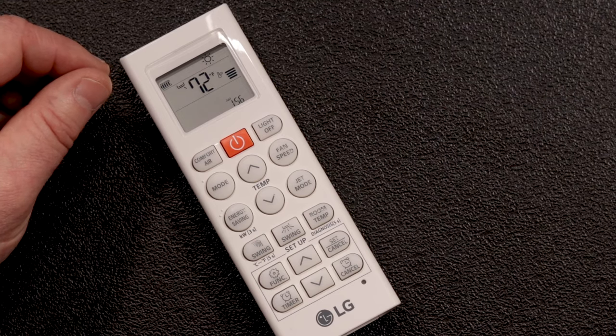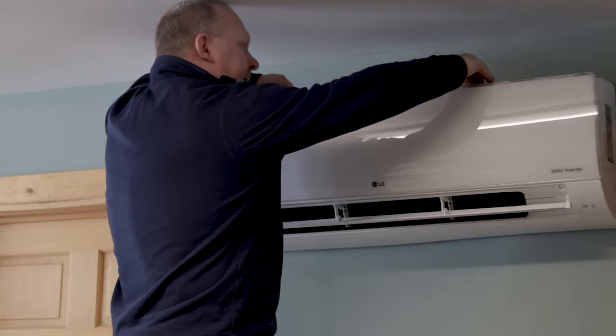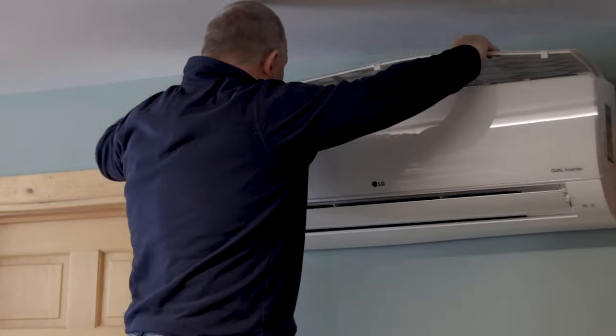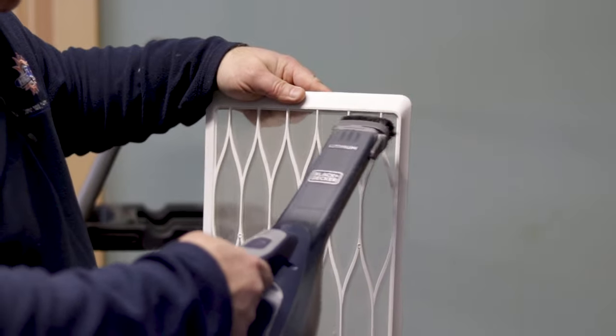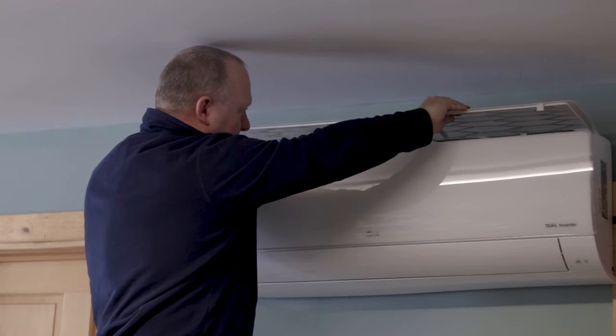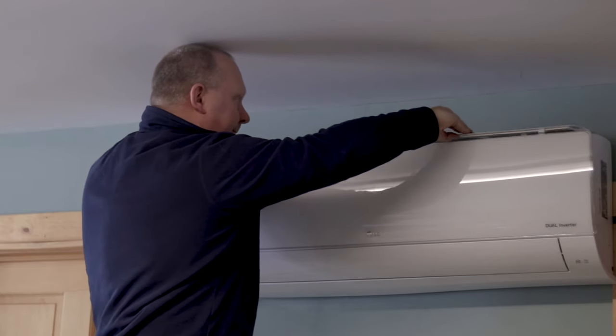To ensure efficient operation of your ductless unit, clean the filter every few weeks. Turn the system off, remove the filter, and clean it gently using a vacuum with a brush attachment. Then snap it back into place and turn the system on. Once a year, have your system professionally cleaned as part of a preventive maintenance visit.